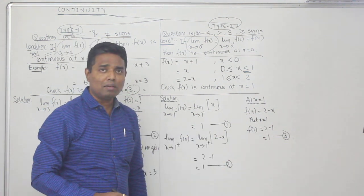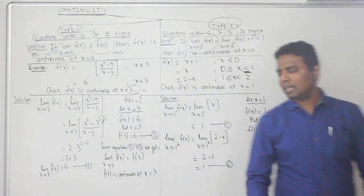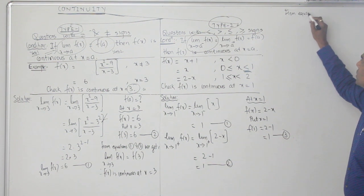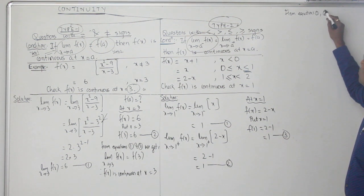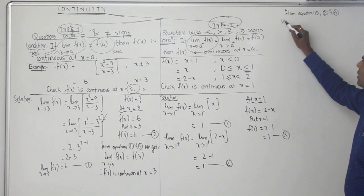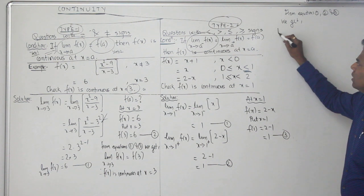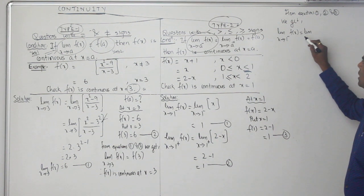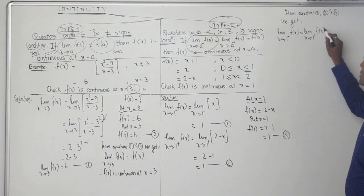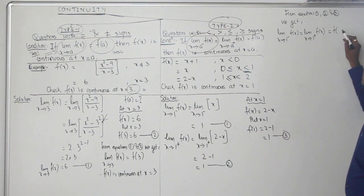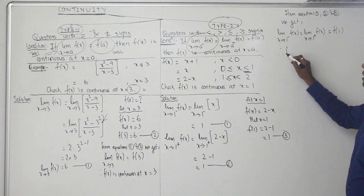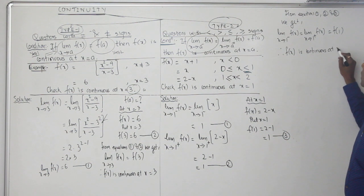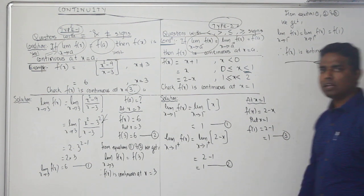All three values are equal. From equations 1, 2, and 3, we get: limit x→1⁻ f(x) = limit x→1⁺ f(x) = f(1) = 1. Therefore, f(x) is continuous at x = 1.